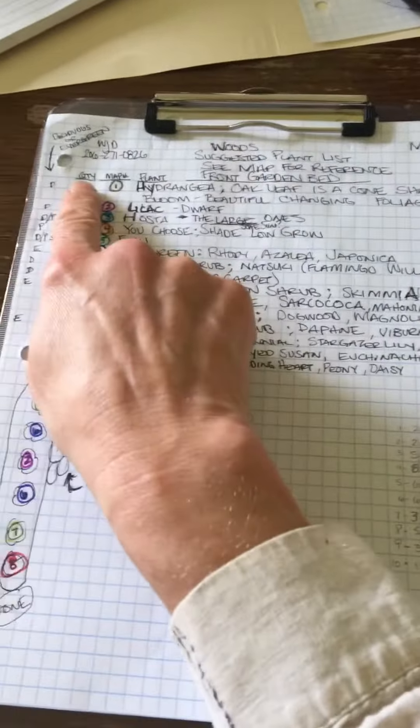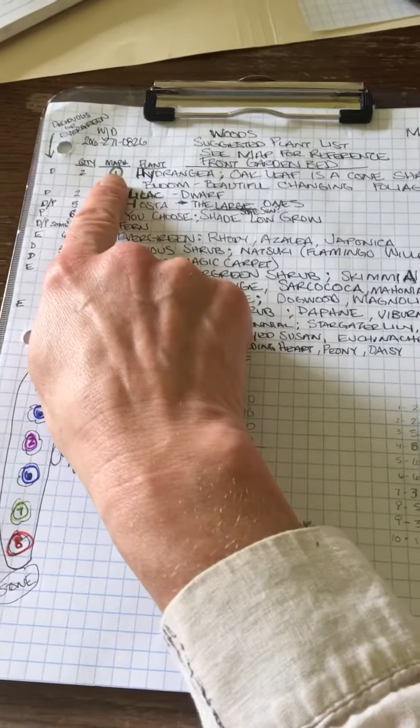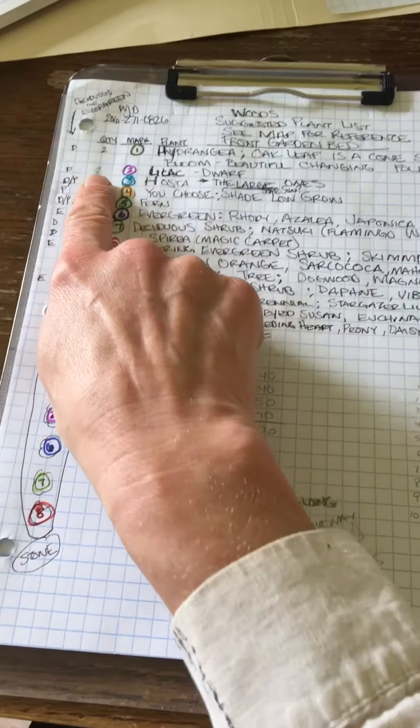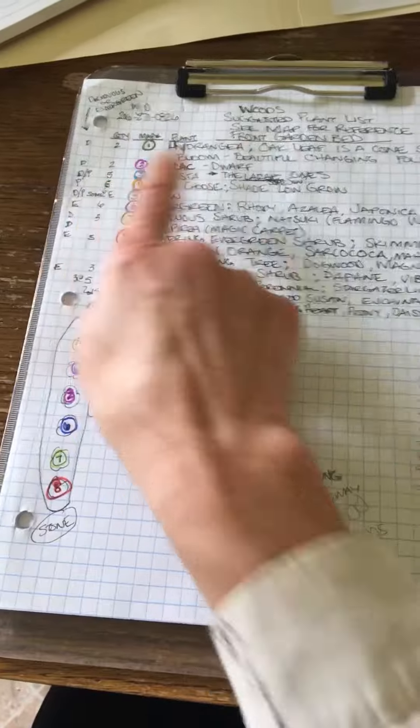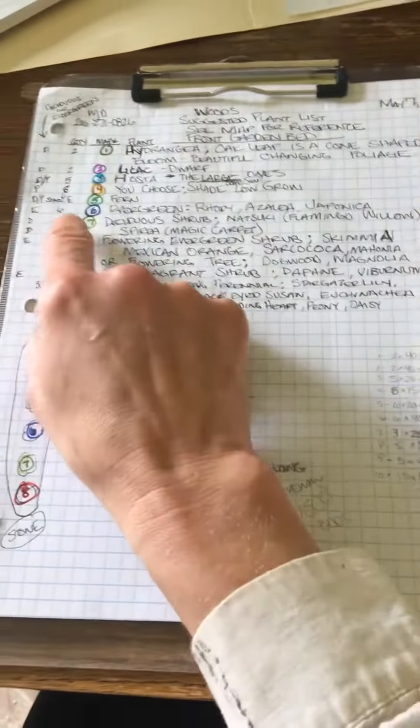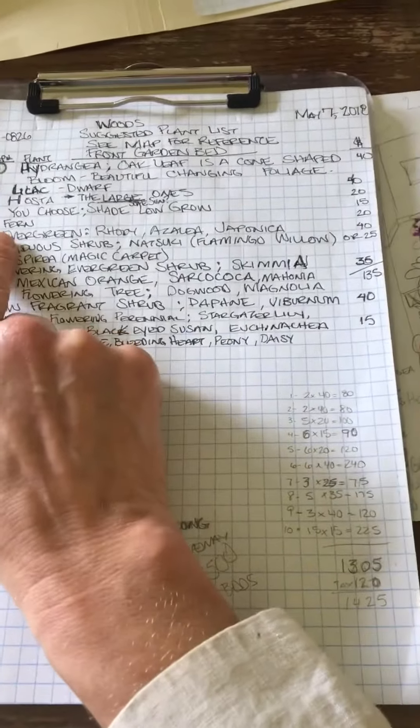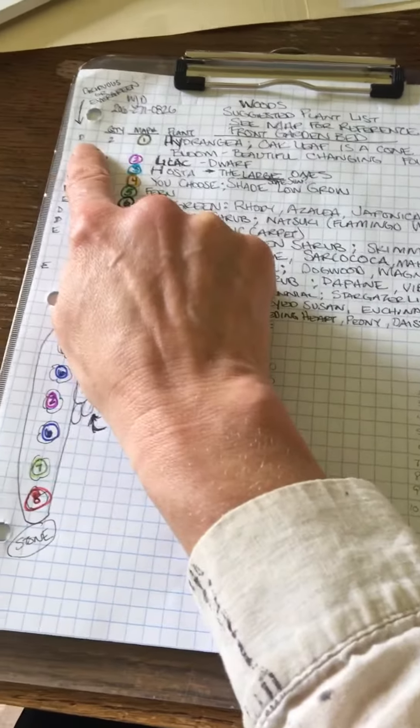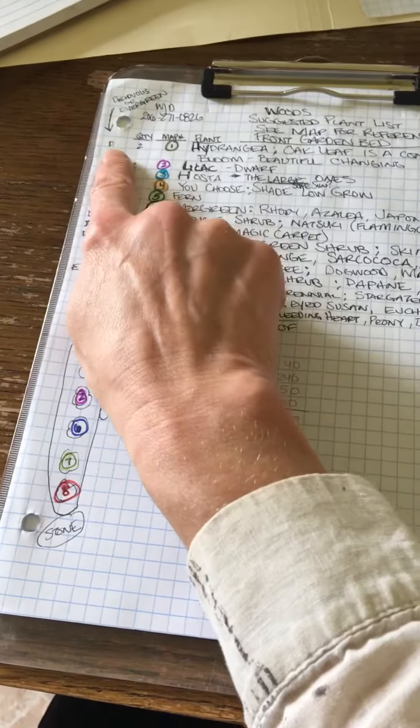Here I have the quantity of how many I suggested on the map, and then also whether they're deciduous or an evergreen. If they're deciduous they go away in the winter. If they're evergreen you have green there all year long.